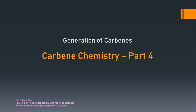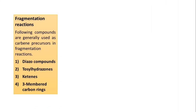In part 3 I have discussed generation of carbene, and this is also generation of carbenes. It will be convenient for you if you watch all the previous videos — parts 1, 2, and 3 — before watching this video. For generation of carbene, basically two methods are there: one is elimination, covered in part 3, and another one is fragmentation reaction.